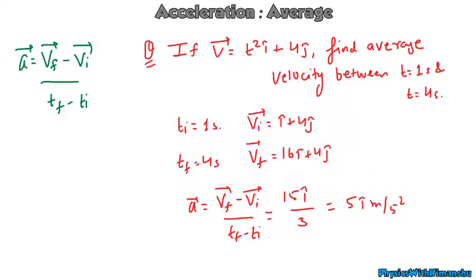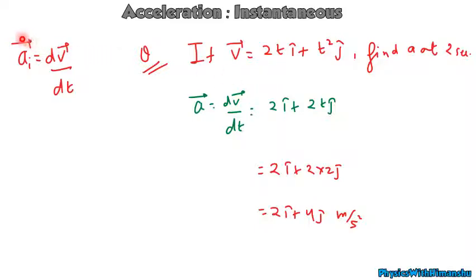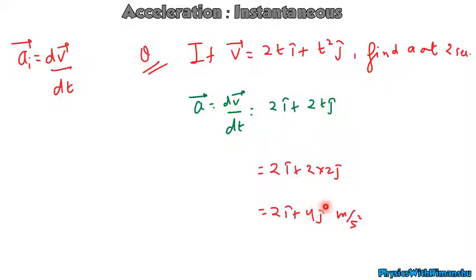Now let's come to instantaneous acceleration, which is given by dv/dt. When only one time is given — for example, find acceleration at t = 2s — you calculate instantaneous acceleration. If velocity is 2t·i-cap plus t²·j-cap, differentiating gives: 2·i-cap plus 2t·j-cap. At t = 2s, the acceleration = 2·i-cap plus 4·j-cap m/s². This is how you find instantaneous acceleration, average acceleration, average velocity, and instantaneous velocity.